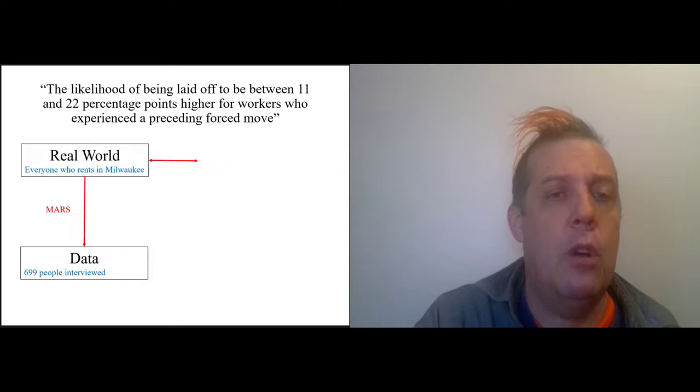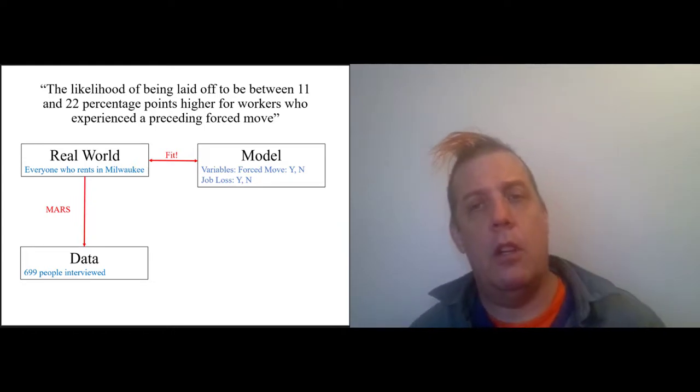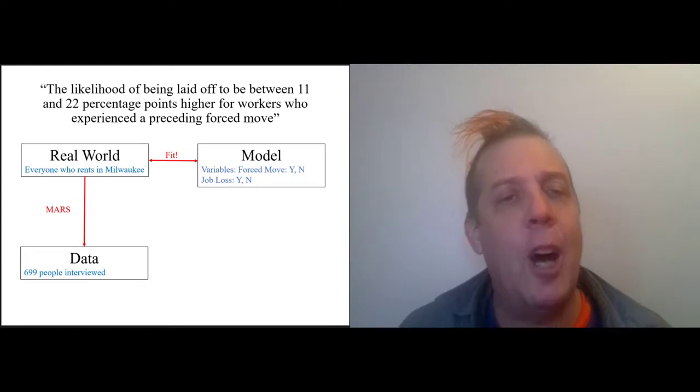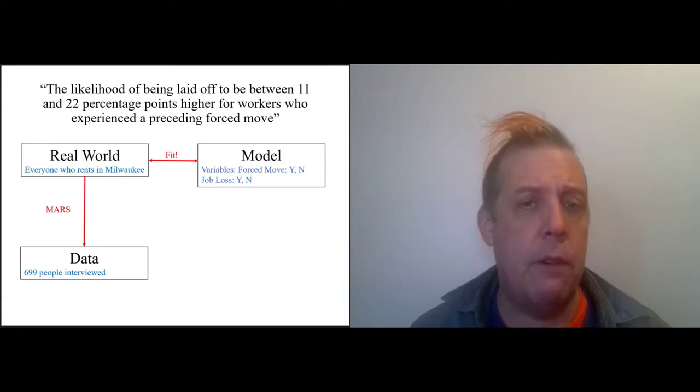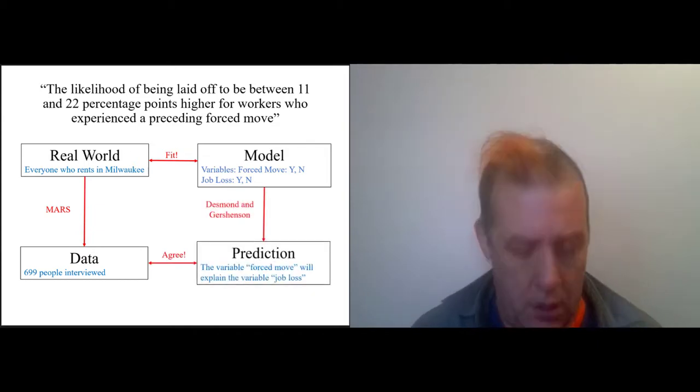So we have the real world, we have the data, and now we have a model of the real world. It says 'fit,' but it doesn't actually fit yet. The model just consists of two variables: was there a forced move, was there job loss. Each of these variables takes two values: yes or no.